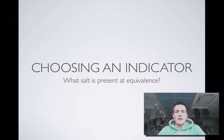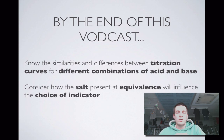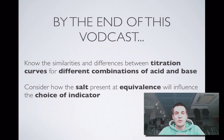Hello and welcome to this film about indicator choices. You'll have a much better feel for what's going on in this film if you've actually done a titration before, so bear in mind some of the stuff that you've seen happening in titrations. What we'll hopefully try and do is look at what a titration curve might look like for different combinations of acids and bases, and we'll also consider how you might use the identity of the salt that's present at equivalence to help you decide on what indicator to use.